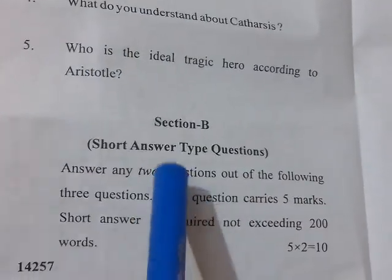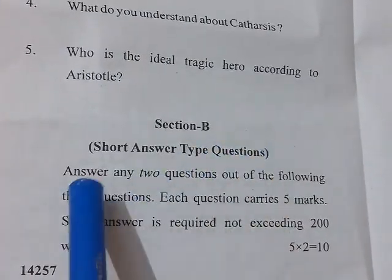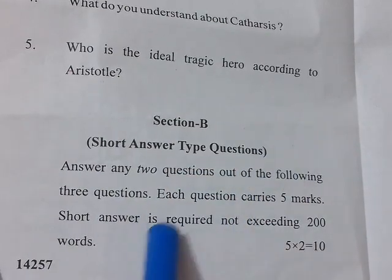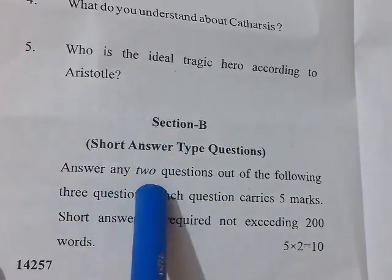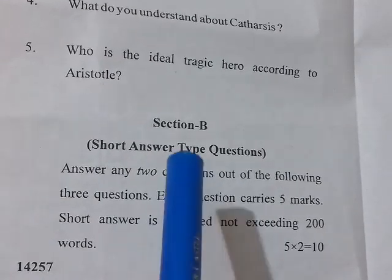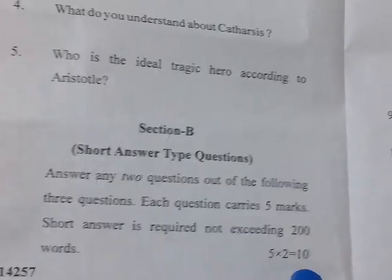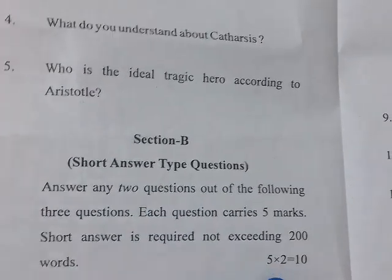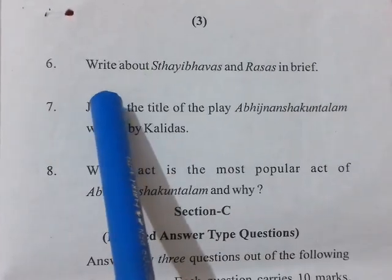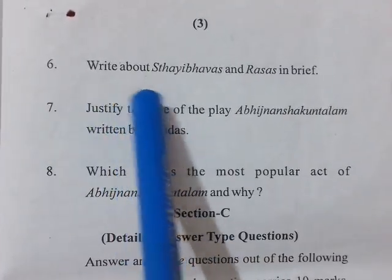Now come to Section B — short answer type questions. Here you will be given three questions and out of three you have to attempt two. Each question will give you five marks. In this section you will be given an option.